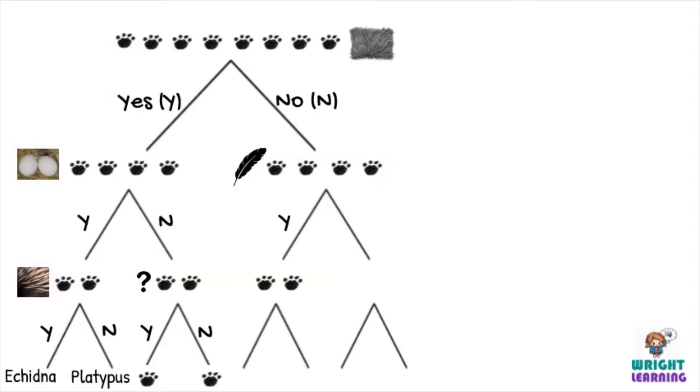If you then focus on the ones that do have feathers, you might notice something like some are colorful and some are not, and split that group based on that feature. Then to finish off, split the last remaining group.